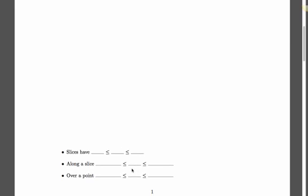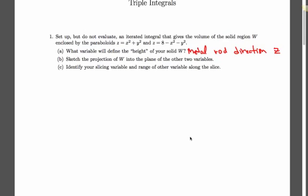The metal rod direction, that's the variable that goes in down there. So now we've settled on z there. Now we need to think about what does this region look like?